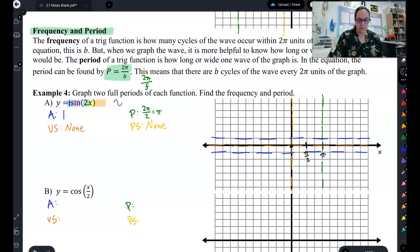So sine starts at the middle, goes to the top, back to the middle, down to the bottom, back to the middle. Notice I still split it into fourths to make my points accurate. And there's our sine wave.